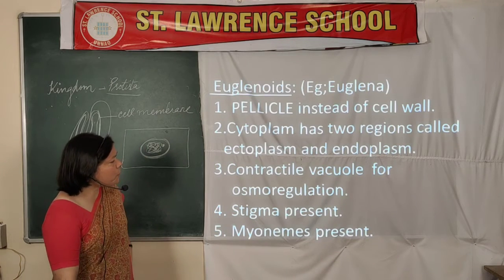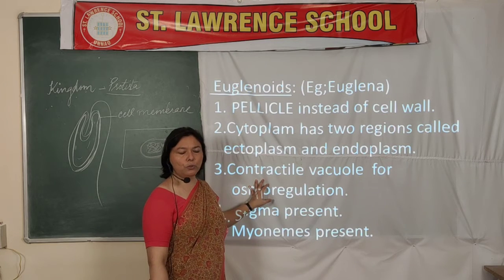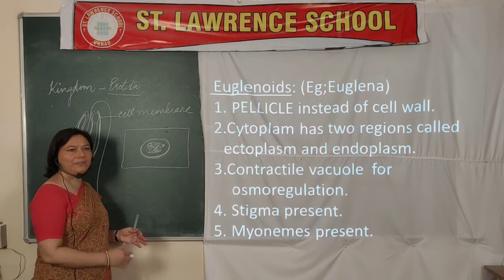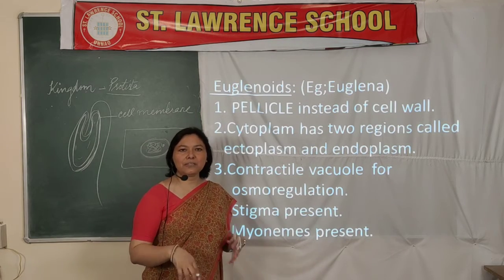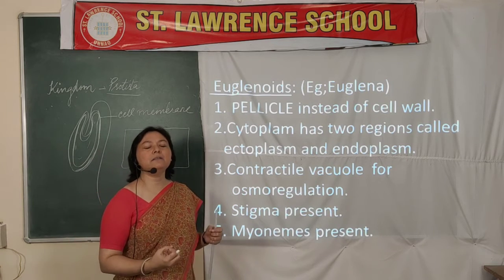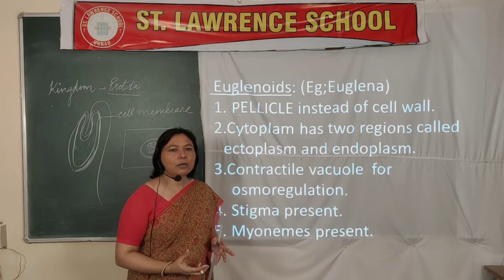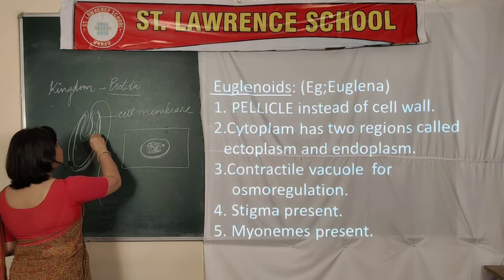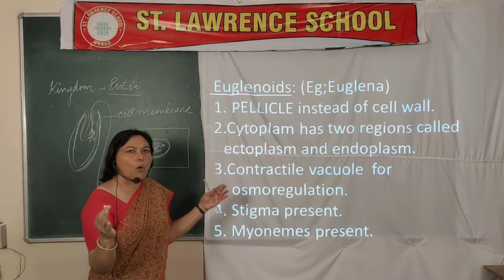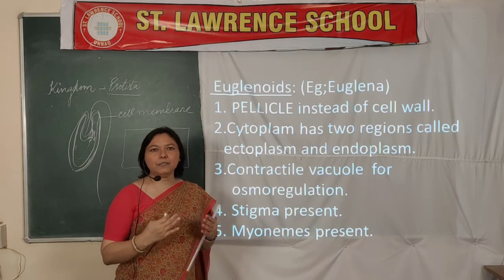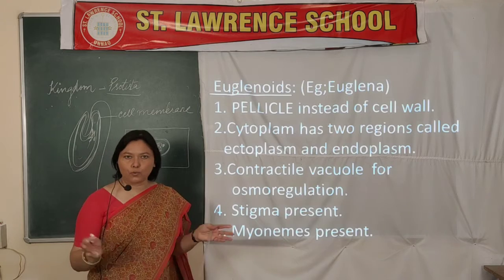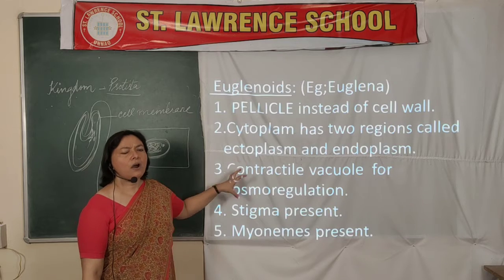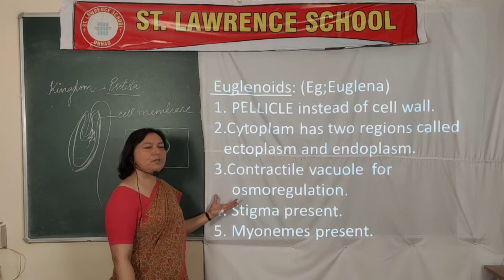A third important property is that Euglenoids possess contractile vacuoles for osmoregulation. Since these are aquatic organisms, large amounts of water enter the cell and must be expelled. The contractile vacuole — a star-shaped structure — collects all the extra water present in the cell body and expels it. This also represents a very simple form of excretion seen in unicellular organisms.